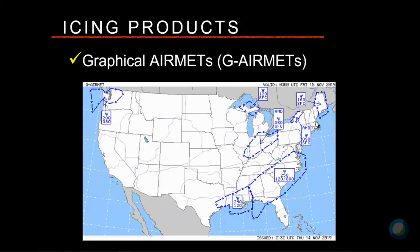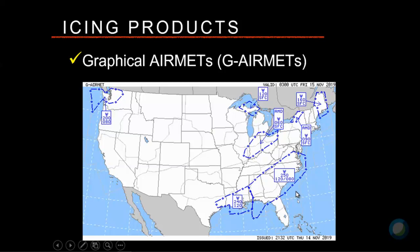Graphical AIRMETs are the official advisory product you should be looking at. They replaced the legacy AIRMET back in 2010 and have higher temporal resolution. They show at a broad level where there's a possibility of icing, including the top of the icing layer — in this case 25,000 feet — and the base of the icing layer. If the bottom has two numbers, that means the freezing level varies over the area — here from 12,000 to 8,000 feet. So if you're in that region anywhere from 8,000 up to 25,000 feet, you have the possibility of encountering moderate airframe ice.